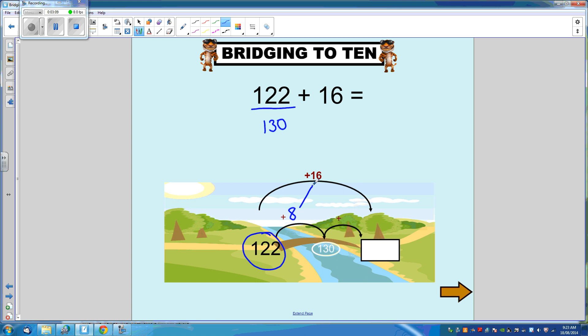We need to add 16. So we've already added 8. Adding another 8 will get us to 16. So 130 plus 8 equals 138. Our answer to 122 plus 16 is 138.